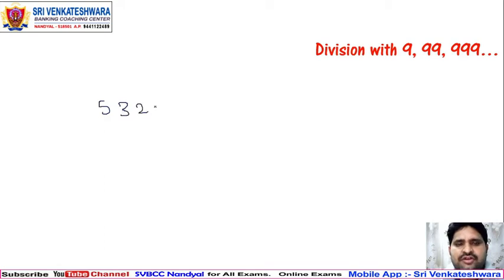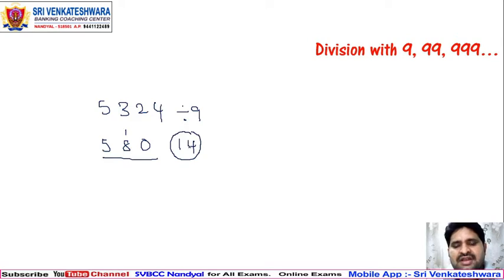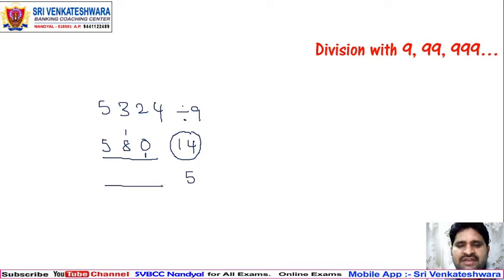Let's try 3245 divided by 9. Take 3 directly, then 3 plus 2 is 5, 5 plus 4 is 9 — but wait, if we get 10 here, carry the 1. Then 10 plus 5 is 15, and the last value 14: since 14 is more than 9, we divide again — it goes once with remainder 5. So the coefficient adjusts accordingly.